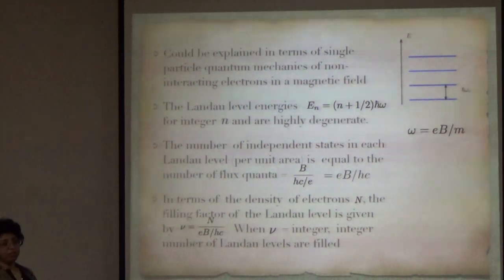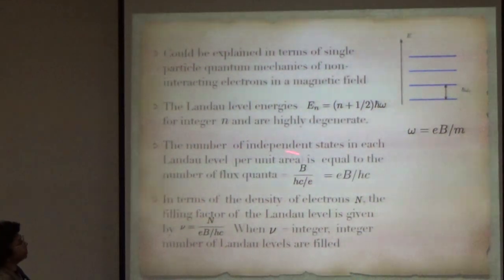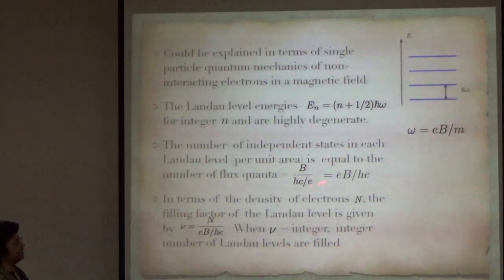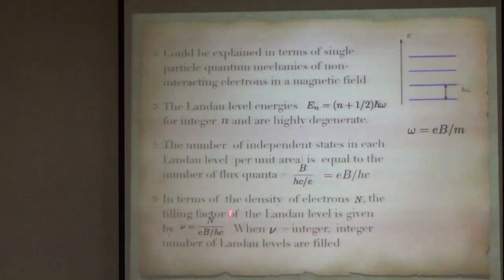In each of these Landau levels, the number of degenerate states that you have is actually fixed by the number of flux quanta, given by eB/ℏc. In terms of the density of electrons, the filling factor of the Landau level is given by the total density of electrons divided by the density of each Landau level. Whenever ν is an integer, you know that an integer number of Landau levels are filled.